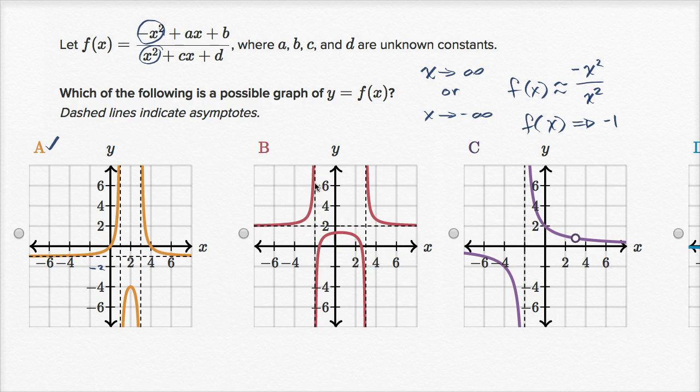Choice B, we have a horizontal asymptote at y equals positive two, so we can rule that out. We know that our horizontal asymptote as x approaches positive or negative infinity is at negative one, y equals negative one.